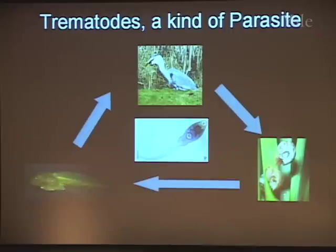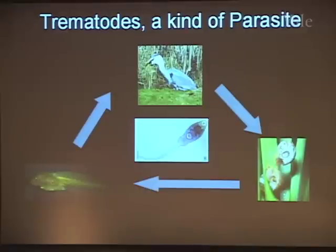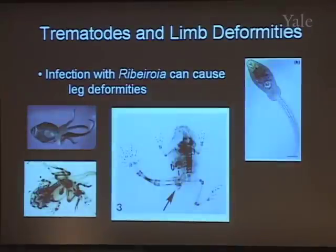It's this process of infecting the tadpole that many people think has been linked to these developmental problems. This parasite doesn't just infect anywhere on the tadpole — it infects right where the hind limb is going to be. This is actually not a bad strategy for the parasite: it wants to get eaten by a heron. If it doesn't get eaten by a heron, its life is over. So what better way than to mess up the legs of the frog it's living in so it can't get away from the heron? People think this might actually be an evolutionary strategy to help these parasites get eaten and complete their life cycle.